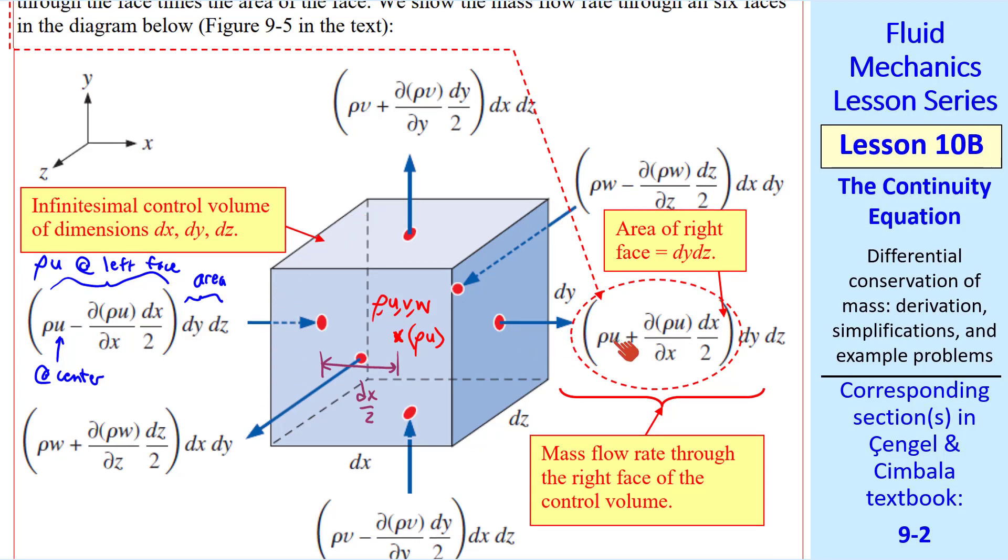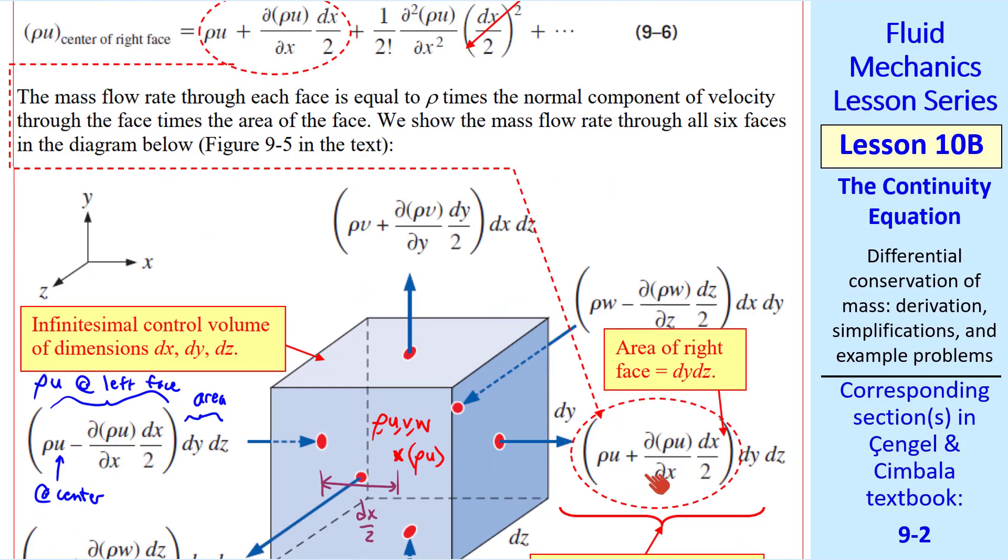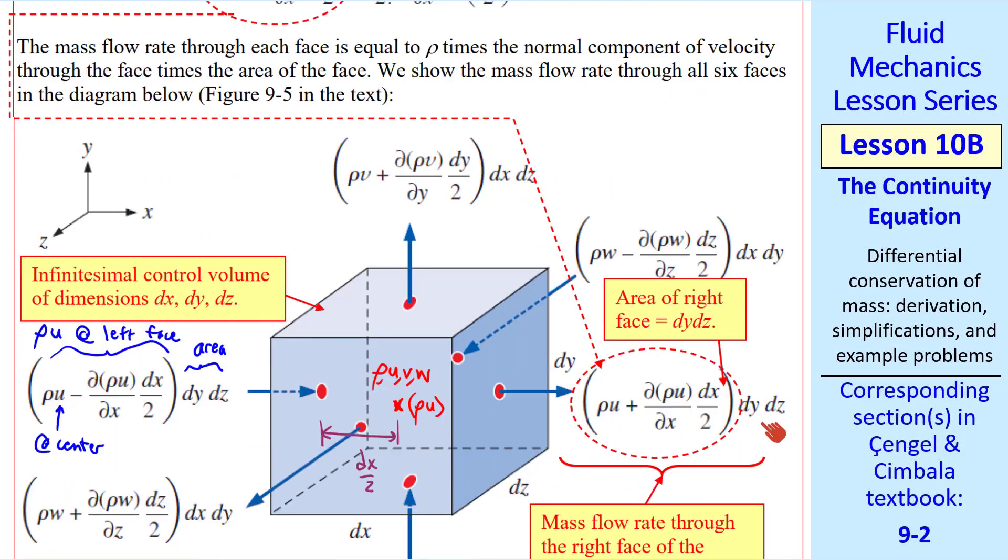We do a similar thing at the right face, except with a plus sign, since from the center to this point is dx over 2 in the positive x direction. And the area of the face is also dy, dz. So this grouping of terms is the mass flow rate through the right face of the control volume. And more technically, it's that term plus the higher order terms. But we're truncating the Taylor series expansion, so we're using only this term for rho u at the center of the face. And when we multiply by the area, this is the mass flow.